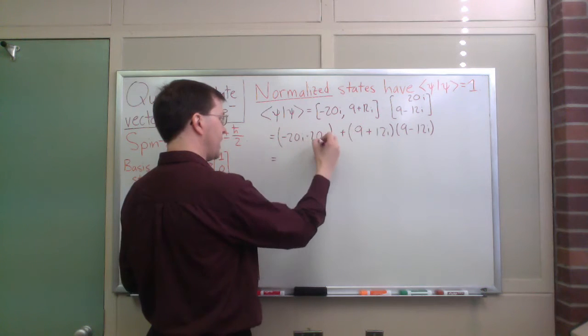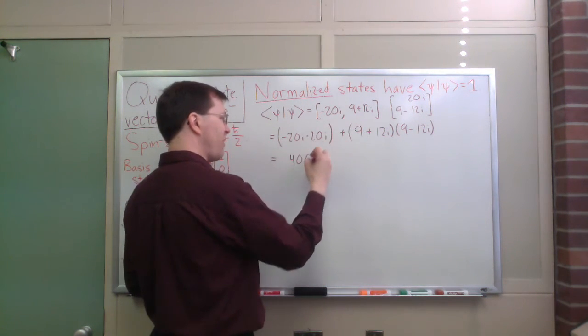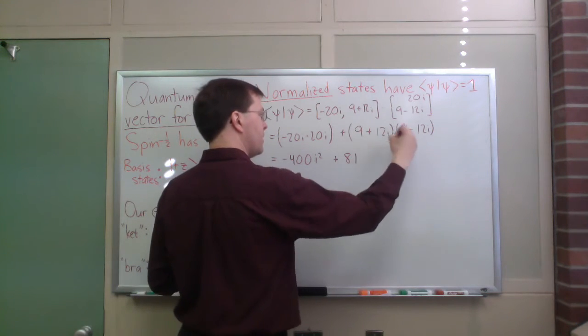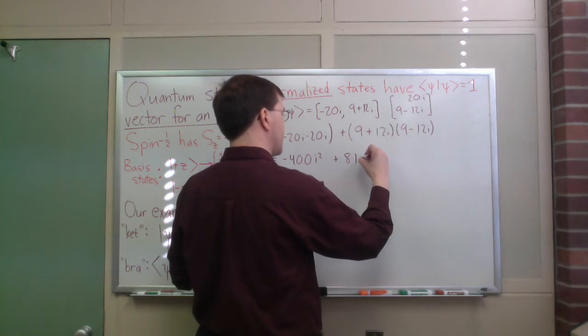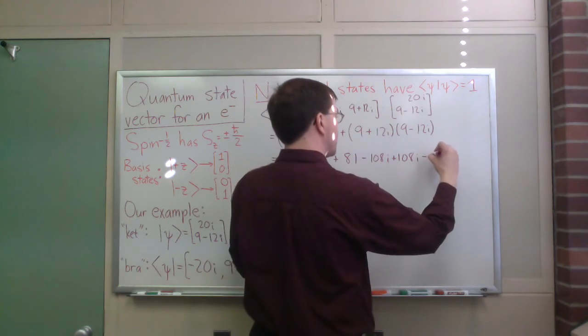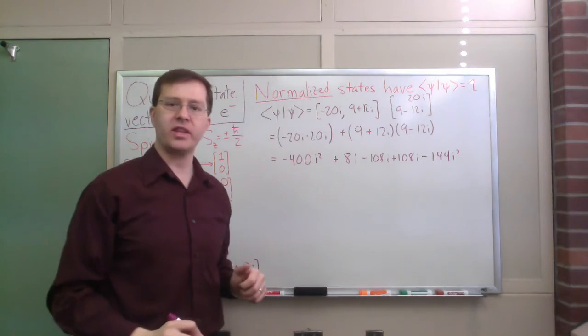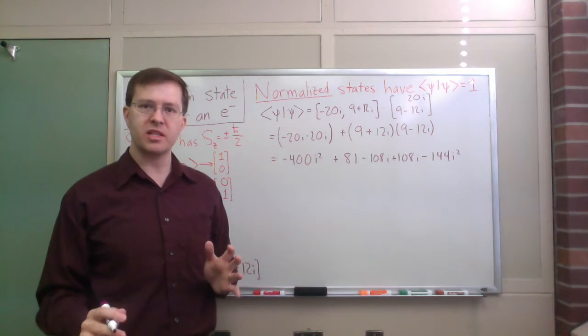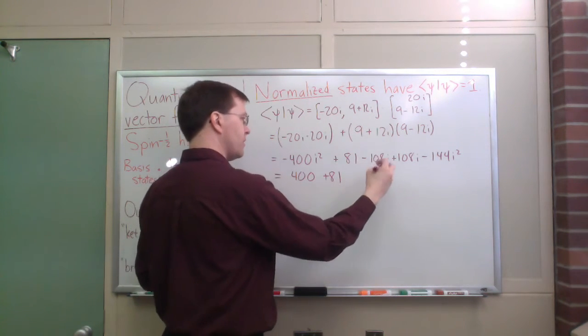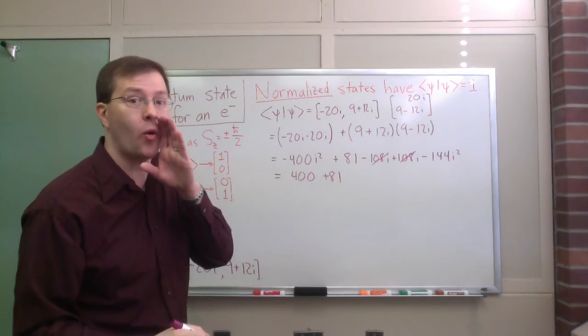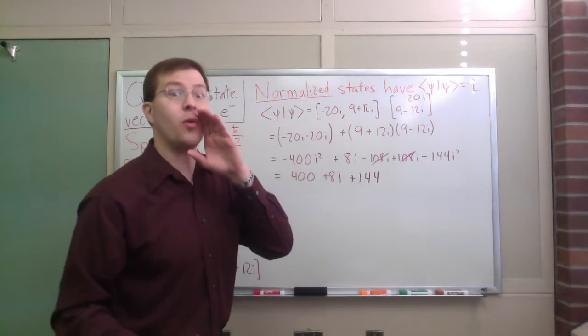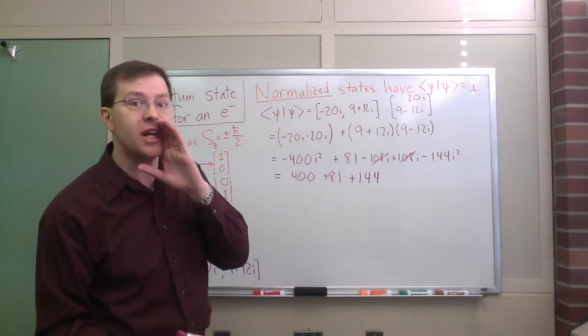This first one, let's see, 20 times 20 is 400, i squared is minus 1, I'll say minus 400i squared, plus 9 times 9 is 81. If I do FOIL, 9 times minus 12 is minus 108i, 12i times 9 is plus 108i, and then minus 144i squared, just multiply everything out. Of course, I'm sure you've got some familiarity with complex numbers at this point. i squared is just minus 1. That means this is 400 plus 81. These two just cancel out. They were guaranteed to cancel out. This will always be a real number if you're doing things right.